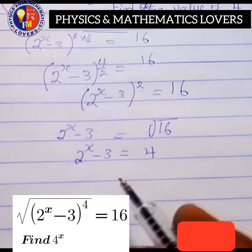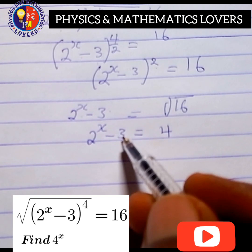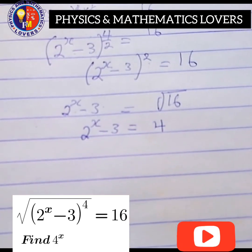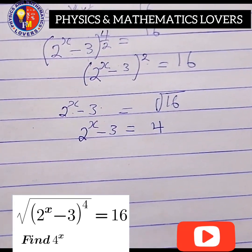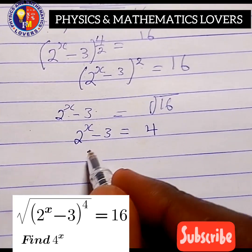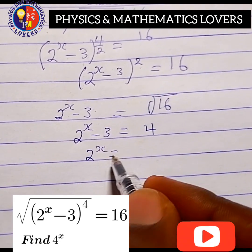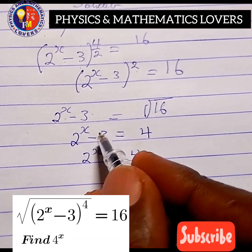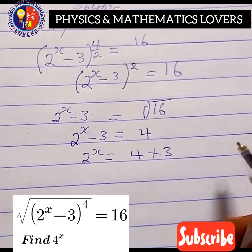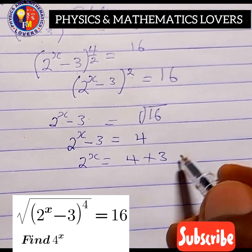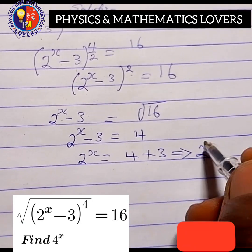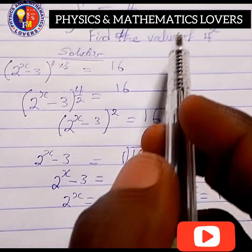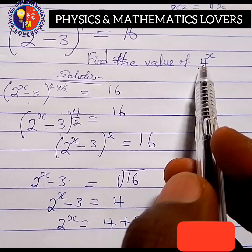The next thing we have to do is move the minus 3 to the other side of the equation. So we say 2 raised to power x equals 4. For the minus 3, moving it across to the other side, it becomes plus 3, which gives us 2 raised to power x equal to 4 times 2 raised to power 3, giving us 2 raised to power x equal to 7.